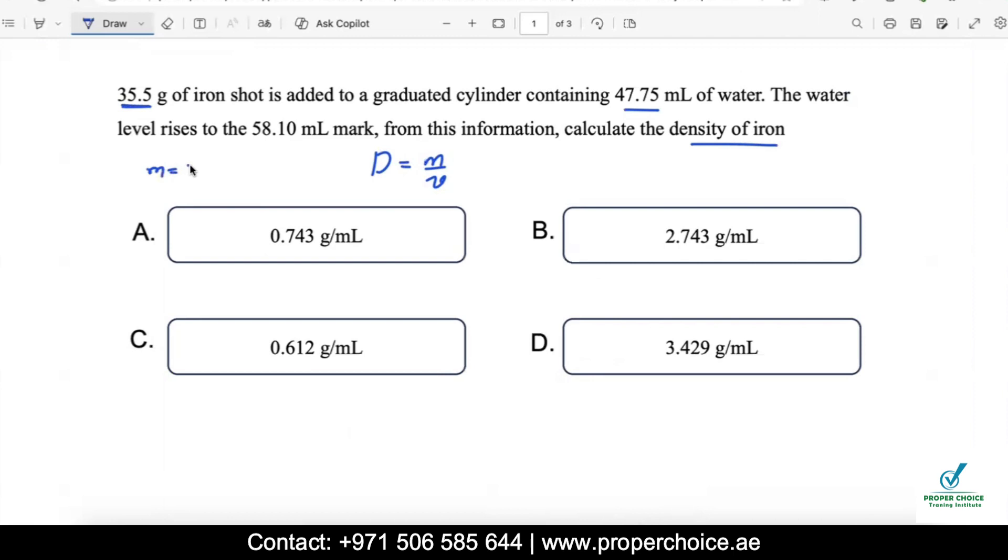Density is mass by volume. Mass is known to us, that is 35.5 grams. Now what is the volume? Should I use this one or should I use this one? If you read the question very carefully, what they are trying to say is a cylinder which is already filled with a certain amount of water. Let's take a cylinder filled with 47.5 milliliters of water. When an iron shot is added, let's say a block of iron is added into it, the water level is rising to the mark, from the base up till here it is 58.10 milliliters.